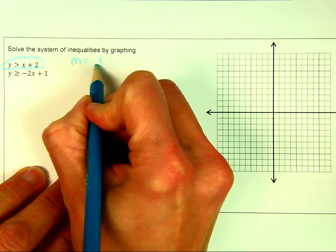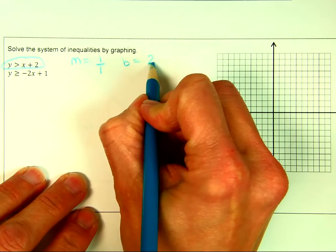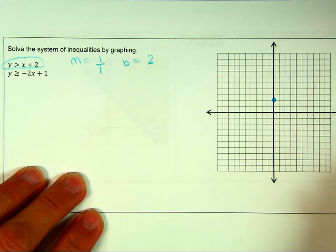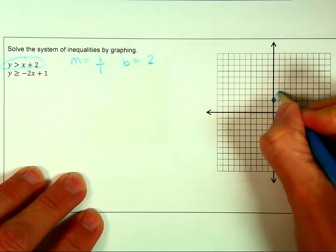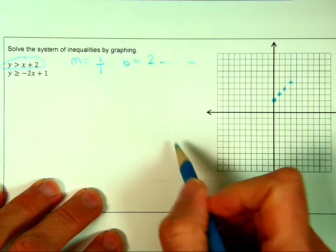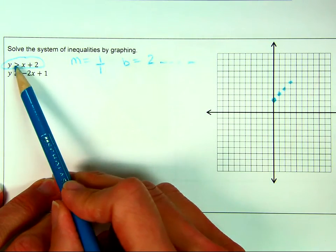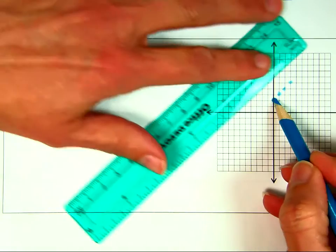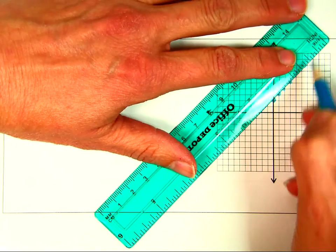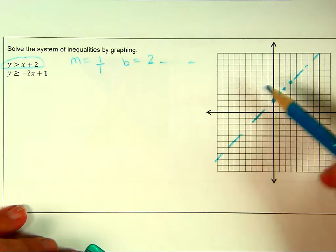My slope is 1, which is 1 over 1, so I go up 1 and right 1 because it's positive. My y-intercept is 2, so I'm going to place a dot at 2 on the y-axis and use my slope — up 1, over 1 — to graph the line. Because it's greater than with no equal sign, the line is dashed. And because it's greater than, I know I'm shading above that line.